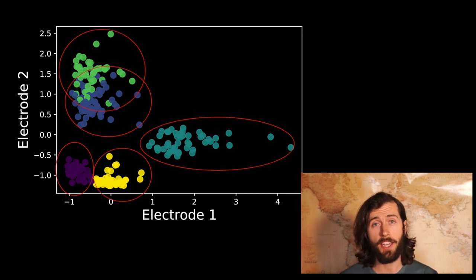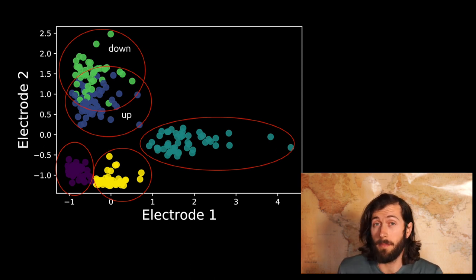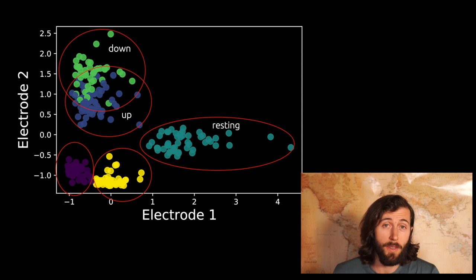Every time the monkey moved the joystick, we plotted that activity. But we also had the information about which way he actually moved the joystick. These are called the true labels, which you can see in the color codes. What we can do with those is label each group of data accordingly. So this might be down, this might be up, this might be when the monkey was resting, this could be when the monkey moved to the left, and this could be when the monkey moved to the right.